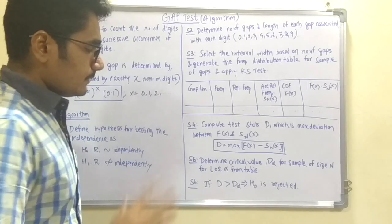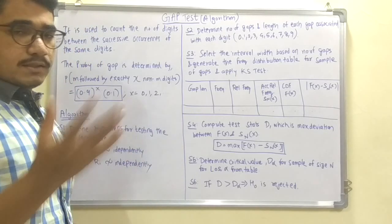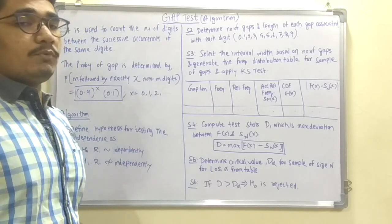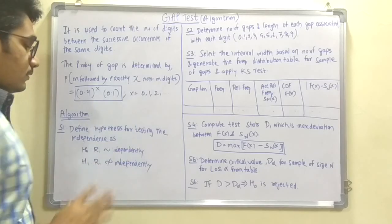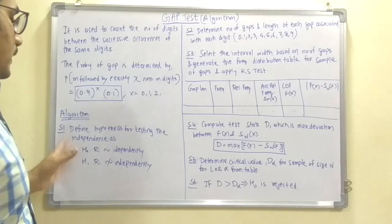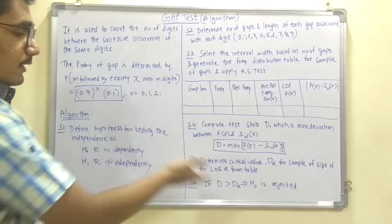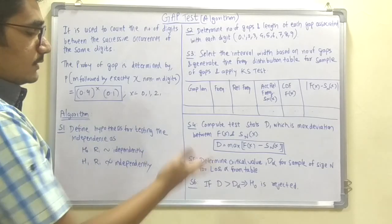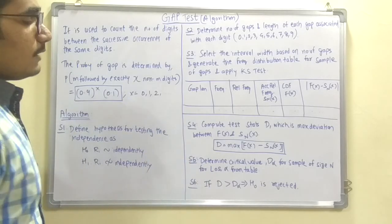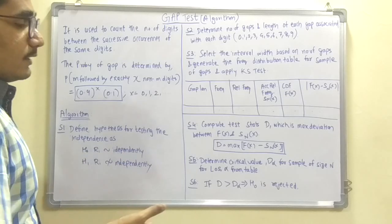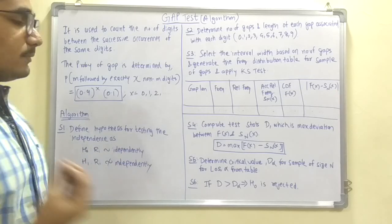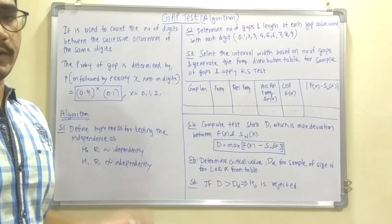The final step is to determine if d is greater than d_alpha. If so, then the hypothesis H0 is rejected, meaning the numbers are not independently distributed. Else it is accepted.